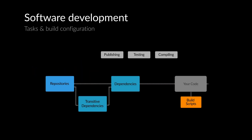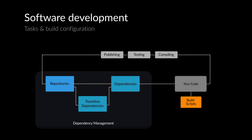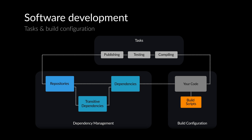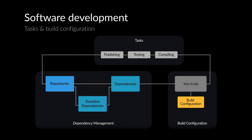Build tools emerged so that instead of having these scripts for every project, you could instead have some configuration for the build tool that told it things like where the source code is. The build tool would provide the common tasks that would read this configuration and perform the needed actions. Now, instead of checking in the scripts into version control, this configuration would be checked in instead.